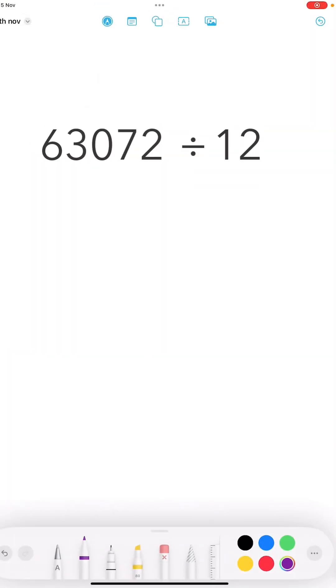So here we have 63,072 divided by 12. And what I'm going to do is split the 12 up into 2 and 6 because that's a factor pair. 2 times 6 equals 12. So if we divide this number by 2 and then by 6, it's exactly the same as if we divided it by 12.